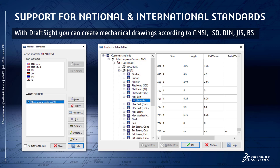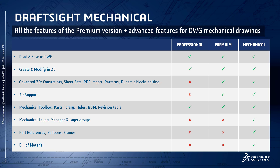You can use imperial, metric, or even dual unit display if required. You also have the ability to customize these standards to your own preferred style, including adapting the hardware library to add, modify, or remove parts. To summarize: the professional version brings essential tools to create and modify 2D drawings in DWG. The premium version adds productivity tools like dynamic block editing, sheet sets, data extract, PDF import, and 3D solid modeling.